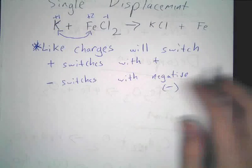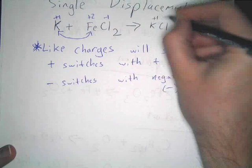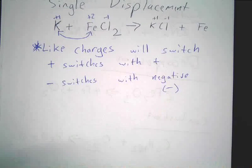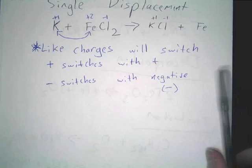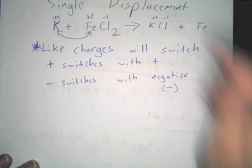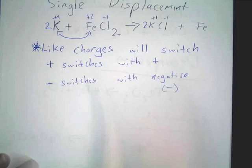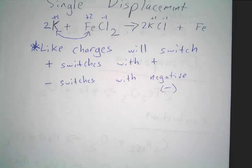Did I write this correctly? Well, potassium is plus one, chlorine is minus one, so that's good. Iron doesn't matter right now. The only thing you've got to do is go back and balance it. So I would put a two here and a two there. Now it's balanced. We're going to do more examples now.